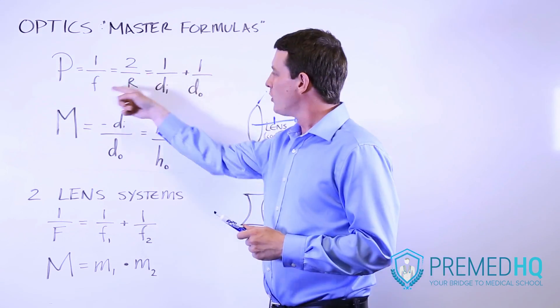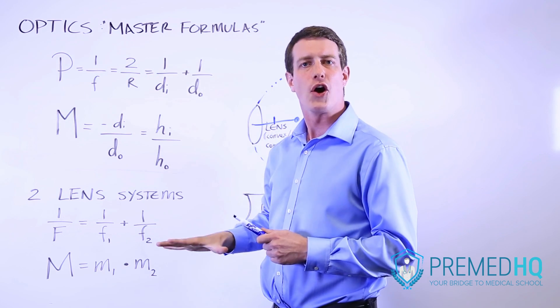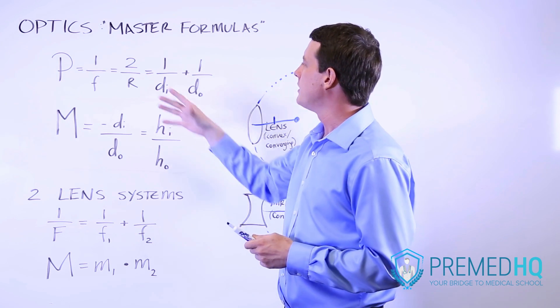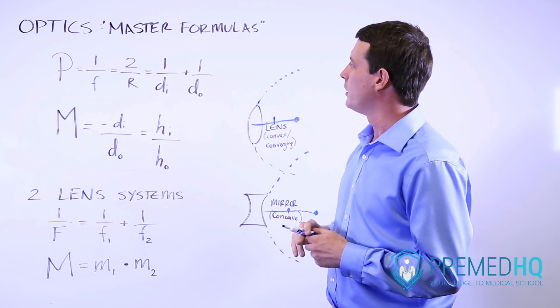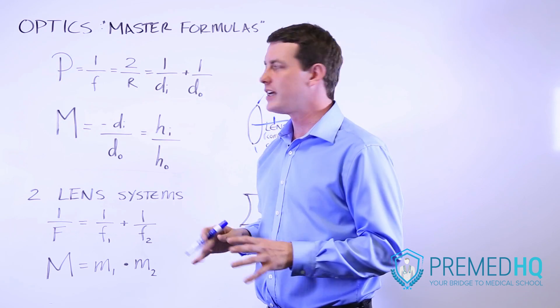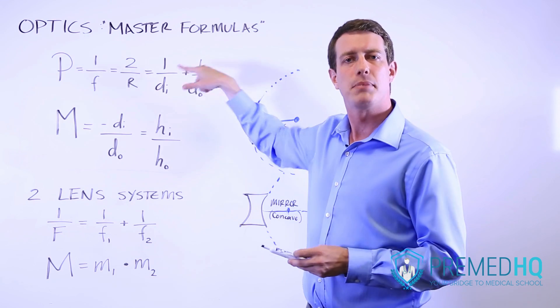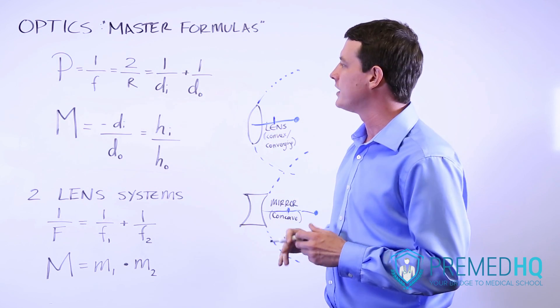So the focal distance is equal to r over 2, therefore 1 over f is equal to 2 over r. This will then bring us to the lens makers equation which says that 1 over the focal distance of your lens is equal to the reciprocal of the distance of the image plus the reciprocal of the distance of the object.